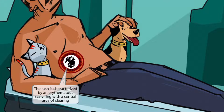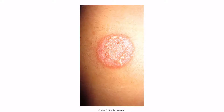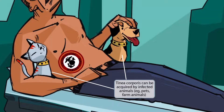Notice that the tattoo is red with a white center — this helps you remember that the rash is characterized by an erythematous scaly ring with a central area of clearing. This is an image of tinea corporis: there is an erythematous ring with pustules and some clearing towards the center. This guy also brought his cats and dogs to the clinic — these animals are here to help you remember that tinea corporis can be acquired by infected animals, such as pets and farm animals.